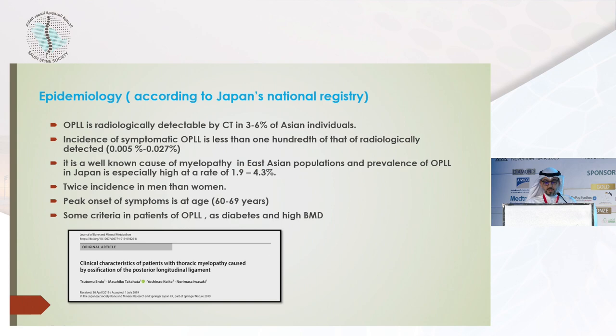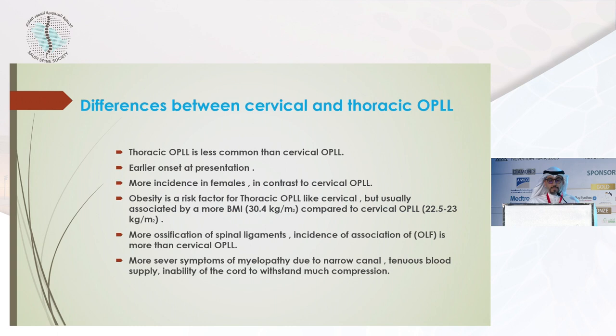Regarding differences between cervical and thoracic OPLL: thoracic OPLL is less common than cervical, with earlier onset of presentation due to multiple causes. It has more incidence in females, in contrast to cervical OPLL which is more common in males. Obesity is a risk factor in both, but thoracic is associated with higher BMI around 30.4 kg/m². There is more ossification of other spinal ligaments like the ligamentum flavum. Symptoms of myelopathy are more severe due to the narrow canal, blood supply of the thoracic spine, and the cord's inability to withstand much compression.